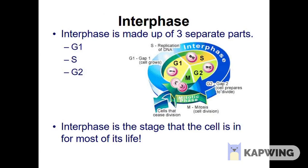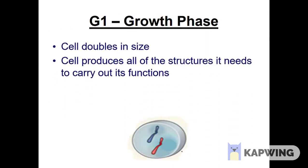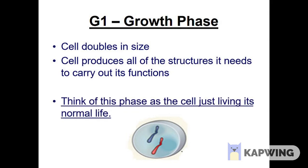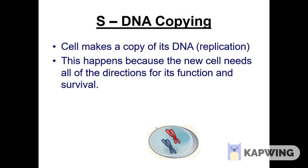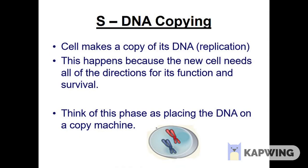First is interphase. Interphase can be classified into three steps: G1, S, and G2. Interphase is a phase where the actual cell performs what it has been prepared for — for example, if it is a cardiac cell it will do the heart pumping process; if it is a skeletal muscle cell it will do the process of giving support. In the G1 phase, the cell will grow to almost double its size and produce all the structures needed to carry out its functions. It is a phase where the cell is active doing what it needs to do. Next is the S phase, which is a very important phase where the DNA is getting copied.